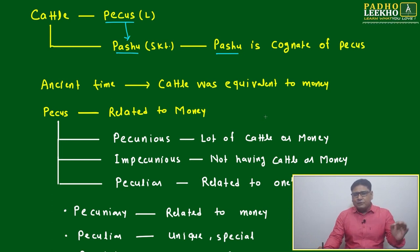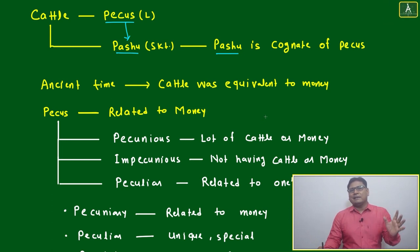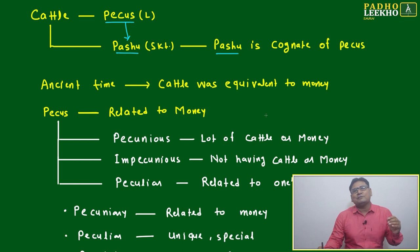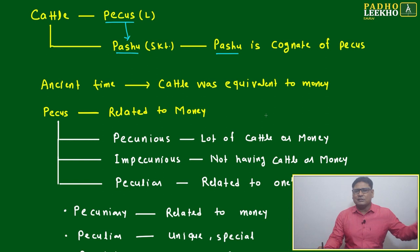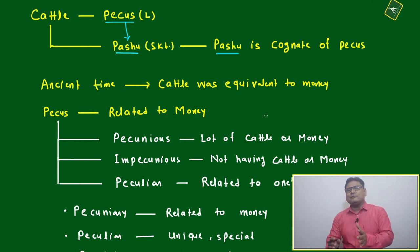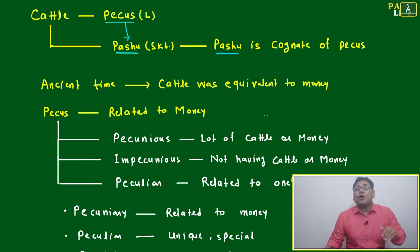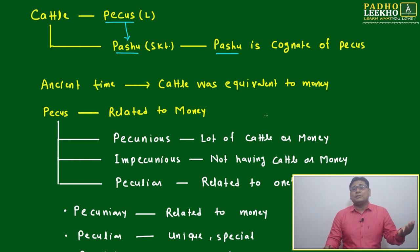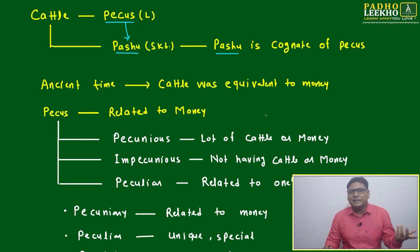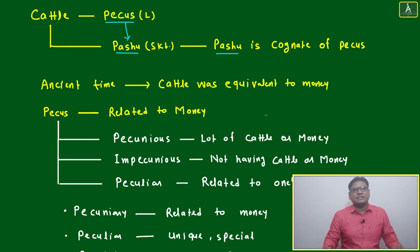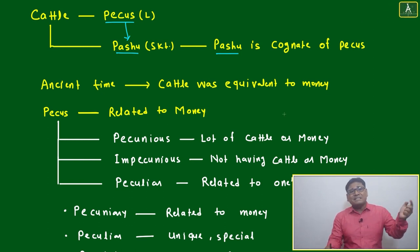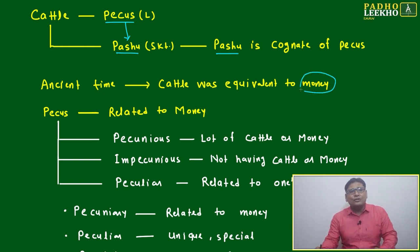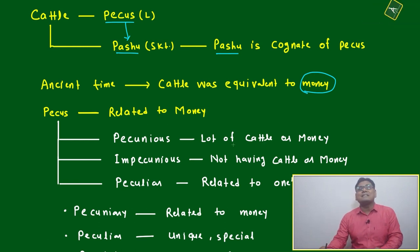Every word has a very interesting journey. If you try to understand how each word started and what its current context of use is, how many different ways it can be used, and how it deviated from its original root and original meaning — one life is not enough to understand all of that. Here, cattle and Pekas: Pekas means money in that time.